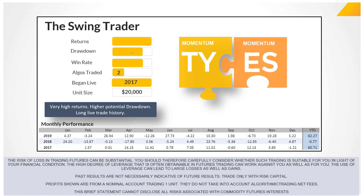More yellow in the chart means a smaller drawdown compared to the other algos, not a bigger one. The Swing Trader has a higher win rate compared to the others, but it does trade only two algos, which might be a concern for some. It began live trading in 2017 — over three years now. The unit size is $20,000, meaning you need an account of about $20,000 to trade one unit, though the $20,000 allows for a significant drawdown buffer without needing to add funds.